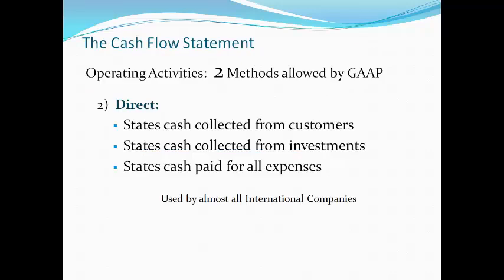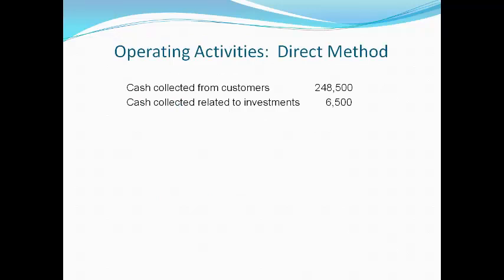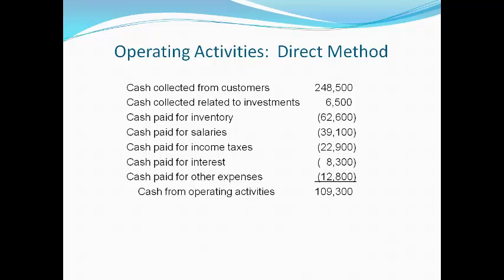The second method that can be used for the operating activities section is the direct method. This method directly states cash received and cash paid, using line items to note where the cash came from and what it was paid for. This method is used by most international companies. The direct method begins with where the cash came from and then lists what the cash was paid for. The lines on the cash flow statement correlate with the lines on the income statement. For example, cash collected from customers is the cash portion of sales, cash paid for inventory is the cash associated with cost of goods sold, and cash paid for salaries is the cash part of salaries expense.